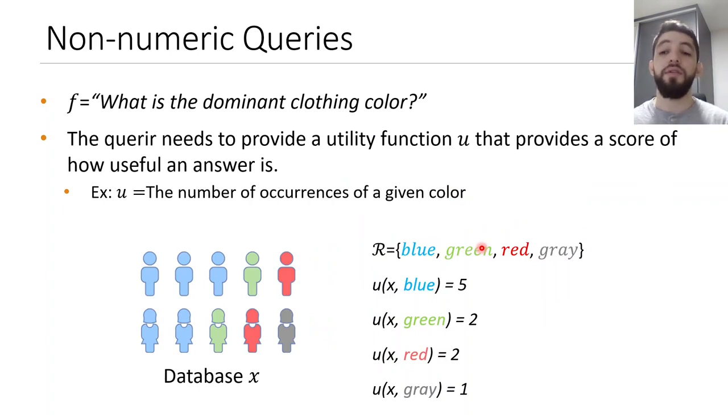In the non-numeric differential privacy setting, the query needs to provide a score of how useful an answer is. For example, the utility of the answer blue is 5 because we have 5 people with blue clothes. Then the utility of green is 2 because we have 2 people with green clothes, and so on.